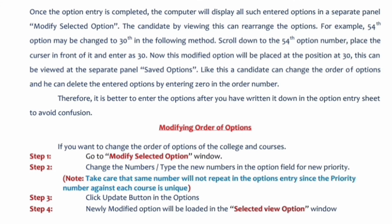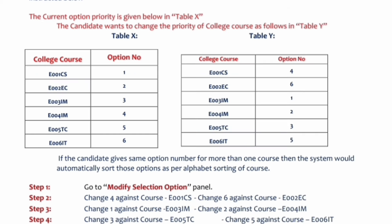Now let me explain how to modify option entries. Step 1: Go to the 'Modify Selected Option' window. Step 2: Change the number and type for the desired option. Step 3: Click the Update button. Step 4: Use 'View Options' to see the new set of entries after modification. Only then submit for the final entry for Round 1.